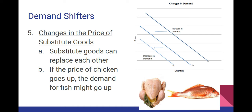The fifth demand shifter is changes in the price of substitute goods. A substitute good is something that can replace something else. The best examples are usually in food: if the price of chicken suddenly goes up — maybe due to a disease killing off chickens, so availability drops — the demand for fish might go up with it. Nobody wants to pay a higher price for chicken, so instead they buy fish. Fish is a substitute good; you can fry fish just as well as chicken, even if it doesn't taste the same.